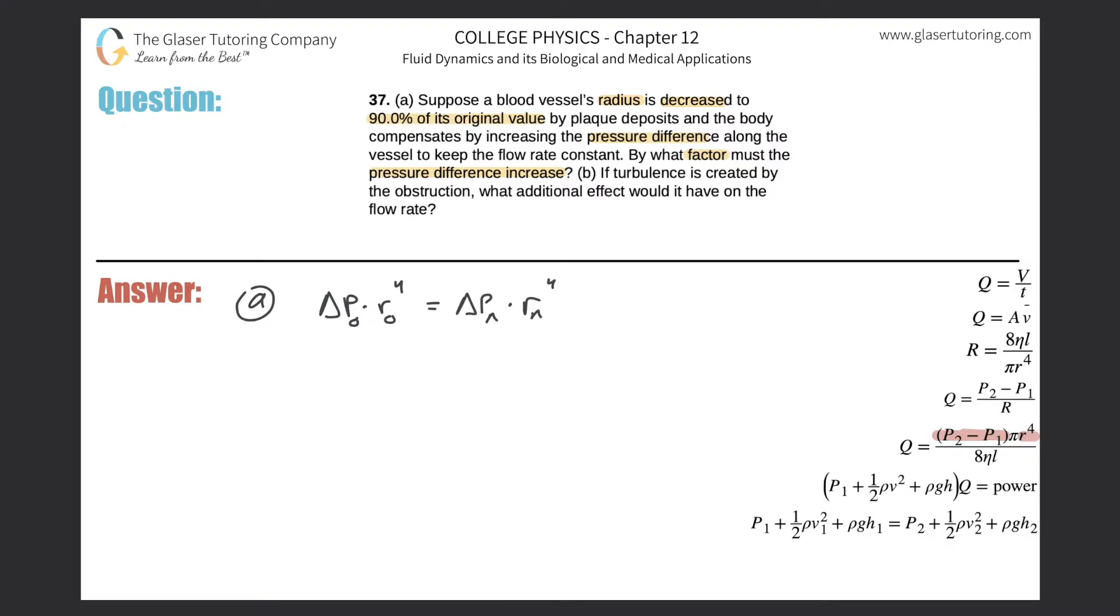Now they want us to find the pressure difference. It says by what factor must the pressure difference increase. If you're looking at the formula over here, if r goes down and we want to maintain the same flow rate, what must happen to P, the pressure differential? It has to go up.